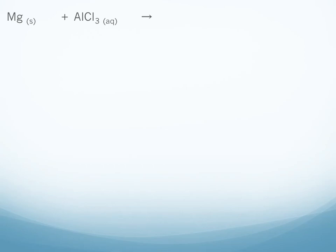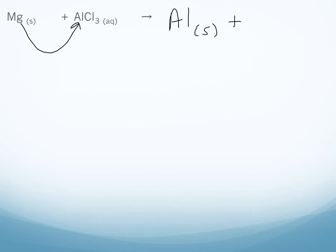In this next example, we want to see if magnesium can replace aluminum. Magnesium is just above aluminum on the activity series, so this one will be a reaction. Aluminum will be our element product, and aluminum is a metal so that's a solid. Then magnesium and chlorine are going to be together in our compound — we look up the charges and get MgCl₂, and we give that aqueous. Don't forget to balance.